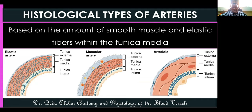The third histological type is the hybrid artery, also called musculoelastic arteries. These have a near equal proportion of elastic fibers and vascular smooth muscle within the tunica media, mixing characteristics of both other types. Examples include the coronary arteries, which supply the heart.